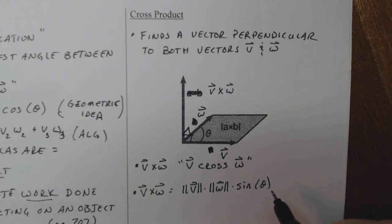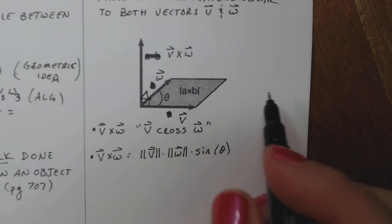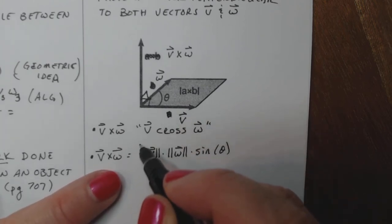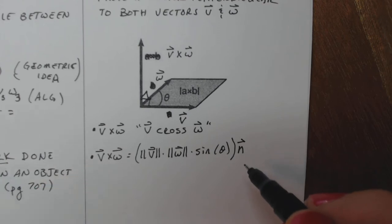I don't want a scalar. What I really want to do is make it a vector. So I multiply that scalar to a normal vector N that's normal to V and W.